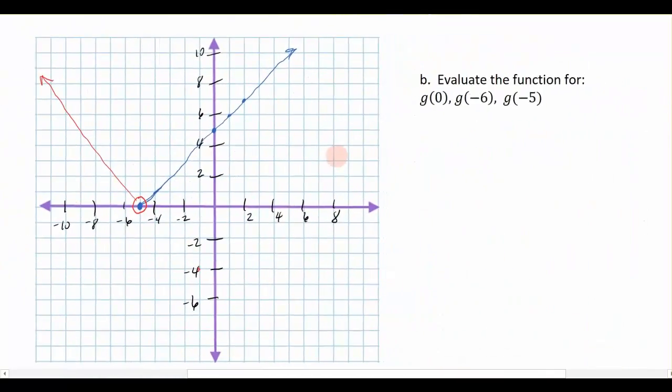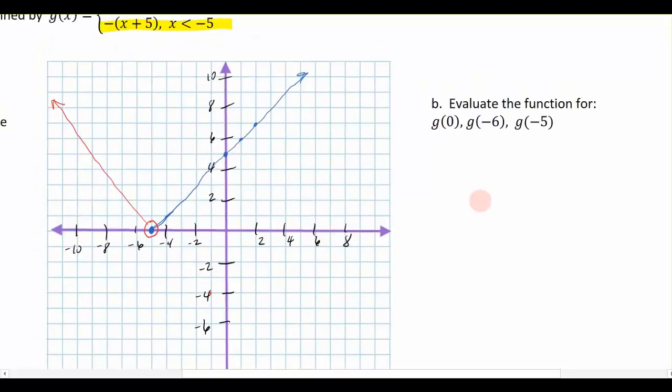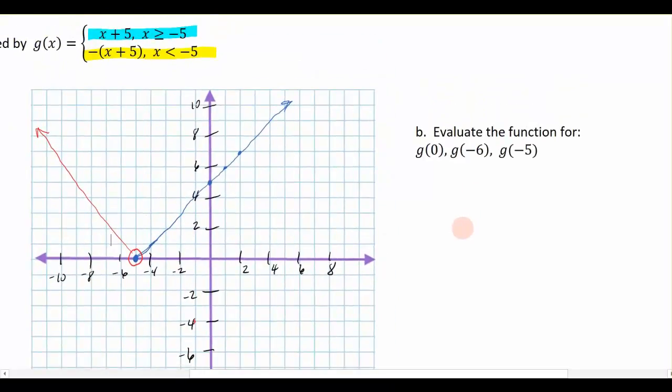Now, let's come over here and evaluate the function for different values. So the first one let's look at is, what would my function value be at 0? So if I'm at 0 here, in other words, remember this inside number is my x value. So if x is 0, what is the corresponding y value? When x is 0, you can see I am at 4, 5 here on the graph.